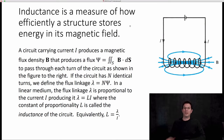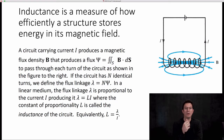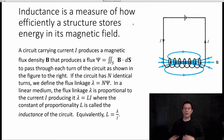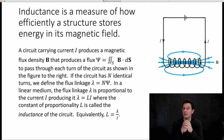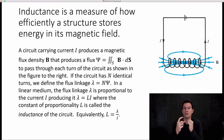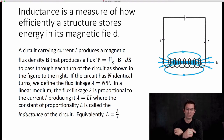What exactly is inductance? Inductance is a measure of how efficiently a structure stores energy in its magnetic field. We talked previously in this course about capacitance and how capacitance is a measure of how efficiently a structure stores energy in its electric field. The dual of capacitance is inductance, and it has to do with the magnetic field.